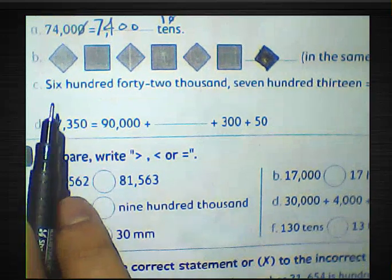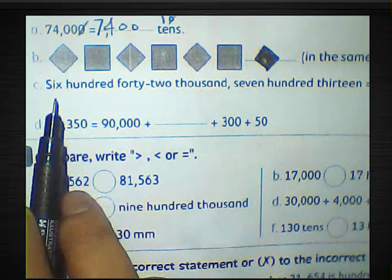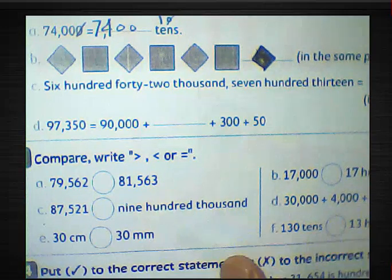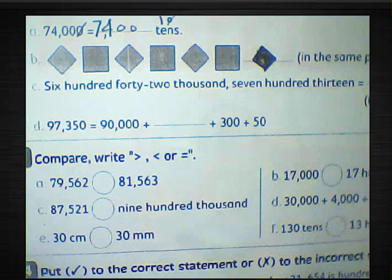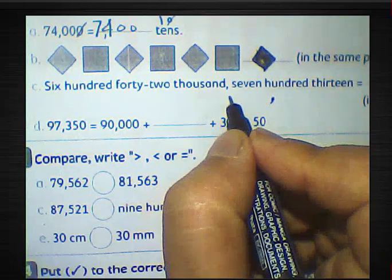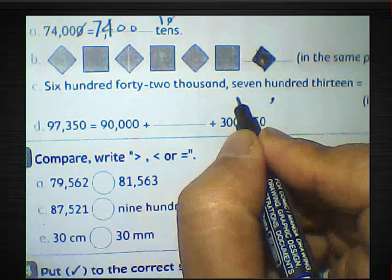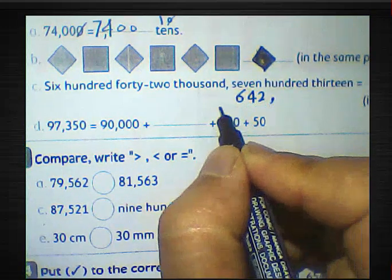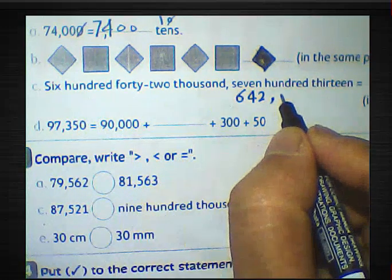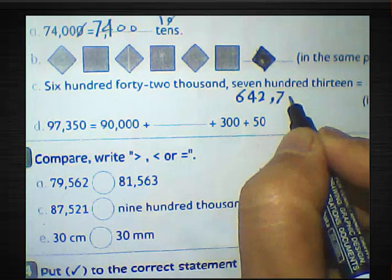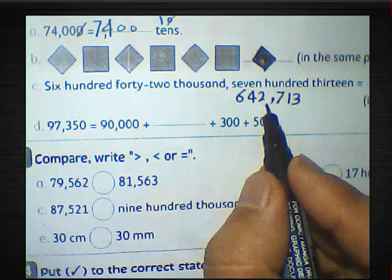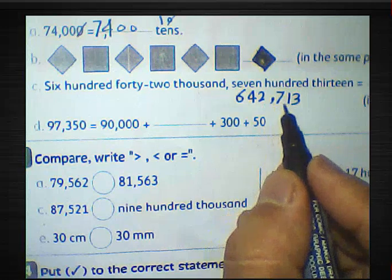Question number two: write 642,713 in standard form. The answer is 642,713.